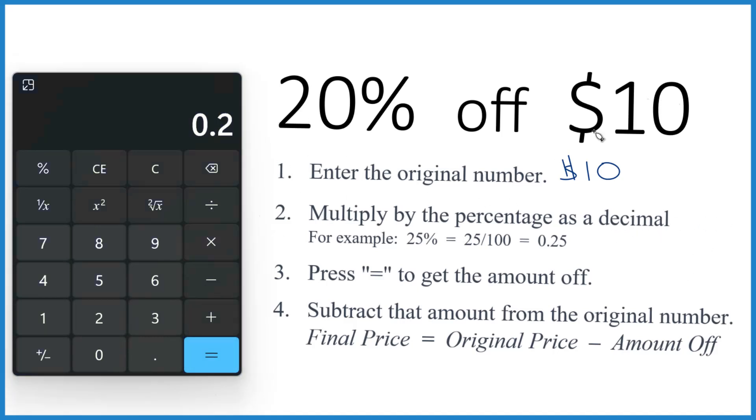And then we multiply our $10, our original number, by 0.2 here. So 0.2 times 10, and that means you get... you press the equals button, you're going to get $2 off.